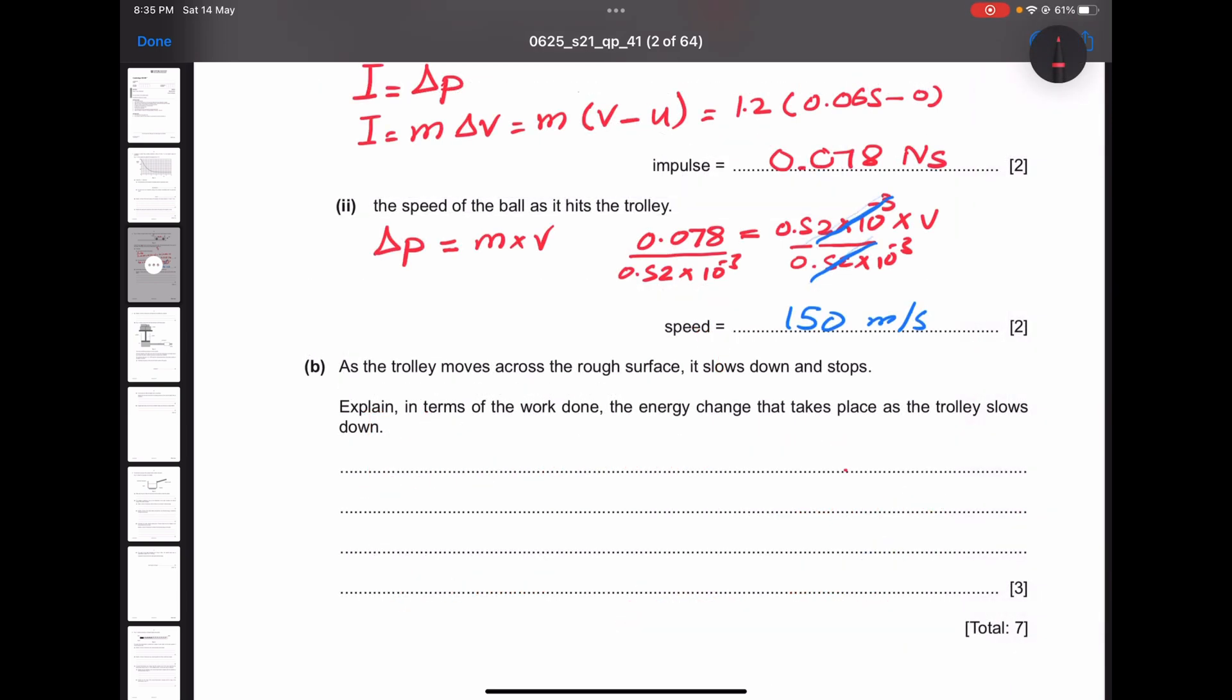Section (b) in question two: as the trolley moves across the rough surface it slows down and stops. Explain in terms of the work done the energy change that takes place as the trolley slows down. The rough surface means there is a kind of friction force because there is slowing down, decreasing the speed, and finally the final velocity becomes zero, it's totally stopped.